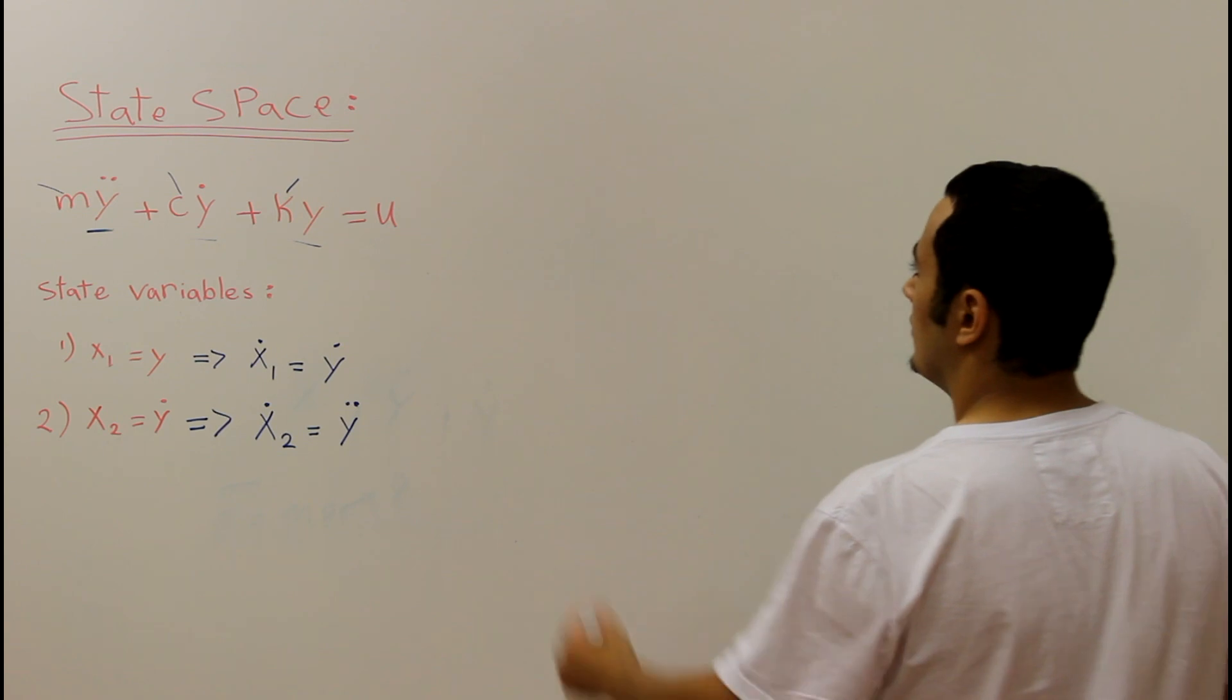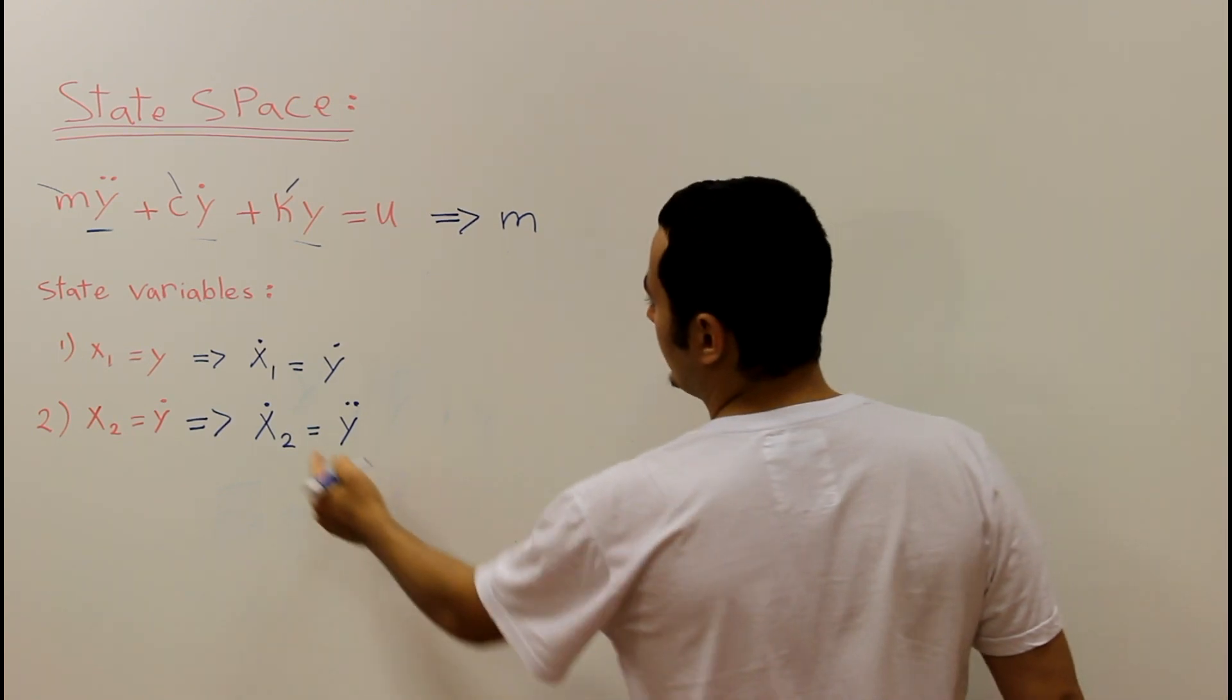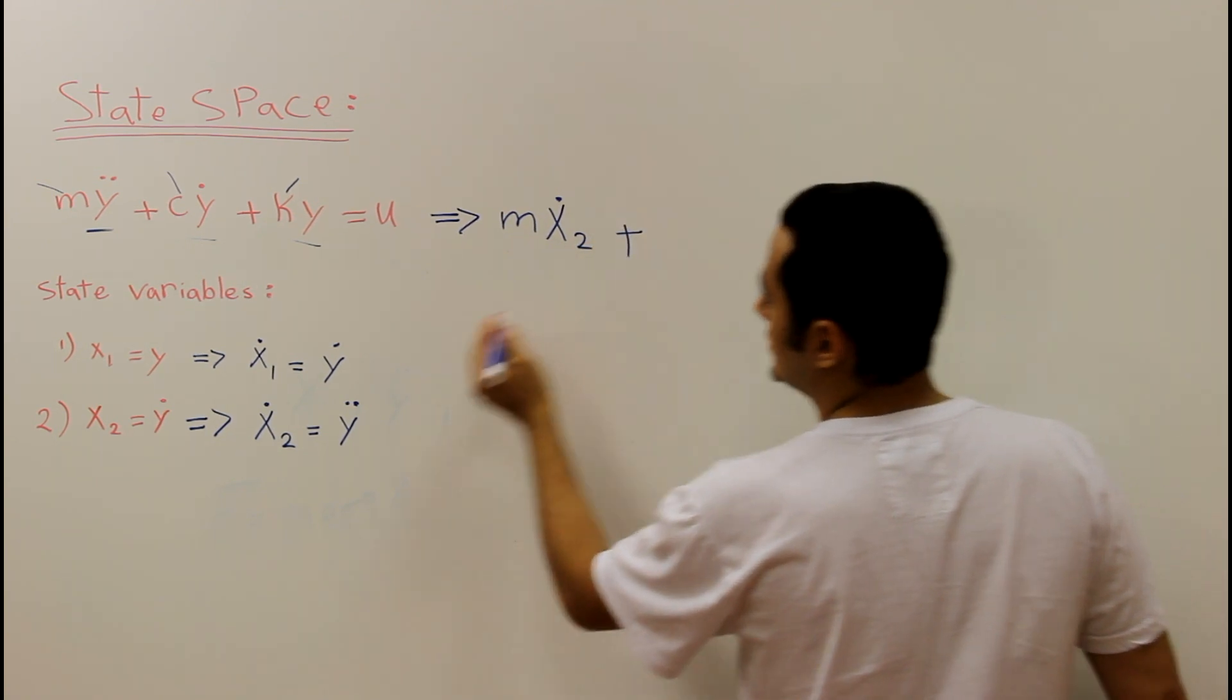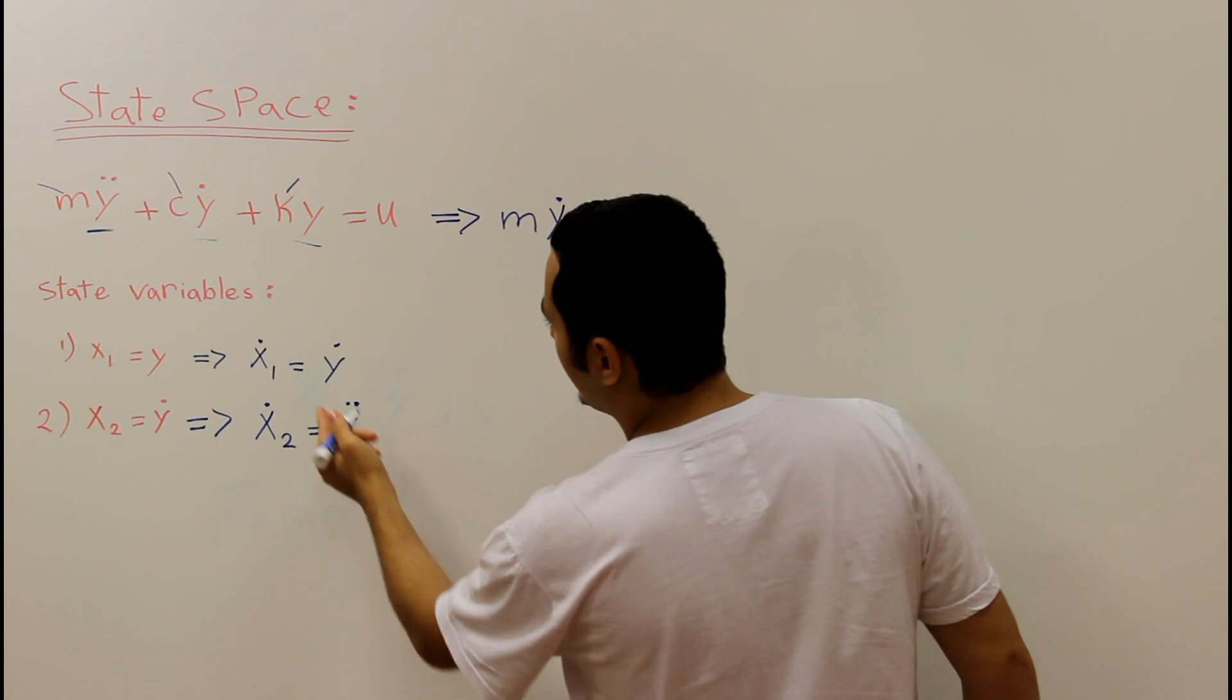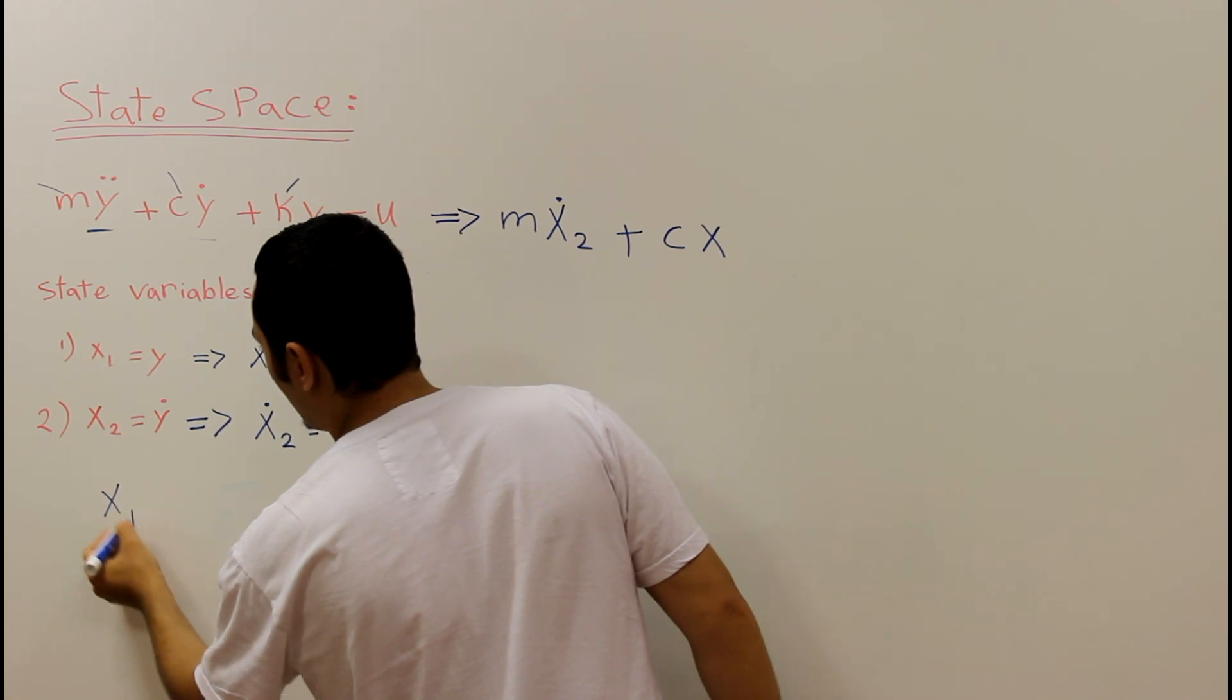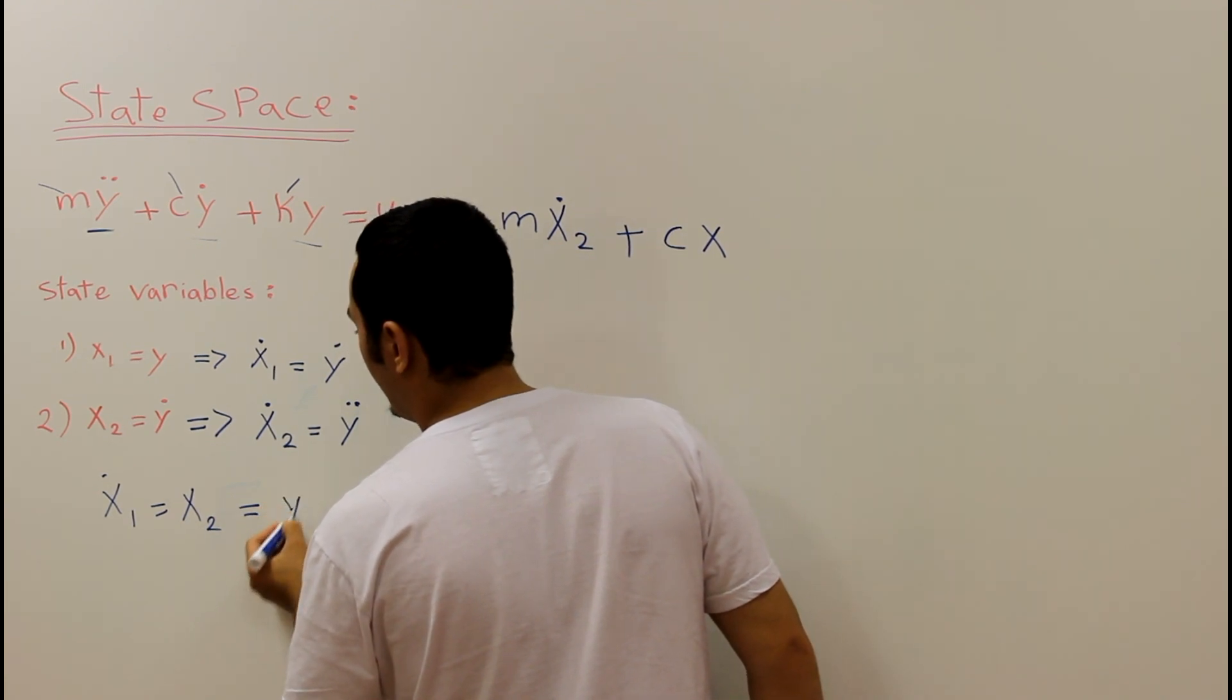Our goal is to make this equation in terms of x. So this equation will be as follows: M y double dot is x2 dot, plus c. Y dot is x1 dot. Or we can say that x1 dot equal x2 equal to y dot.